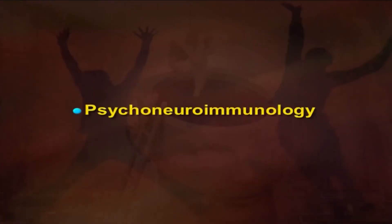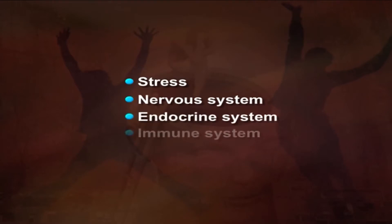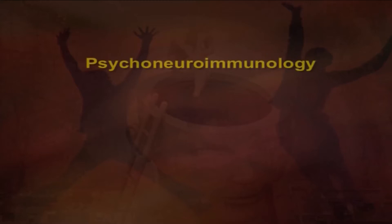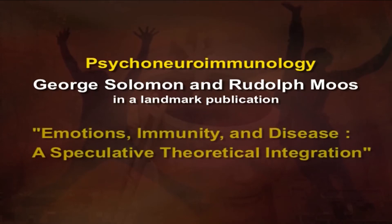However, recent research in a relatively new field of psychoneuroimmunology has revealed that there are a number of connections between psychological factors such as stress and the functioning of physiological systems such as the neural system, the endocrine system, and the immune system. The word psychoneuroimmunology was first coined by George Solomon and Rudolph Moose in a landmark publication titled 'Emotions, Immunity and Disease: A Speculative Theoretical Integration.'